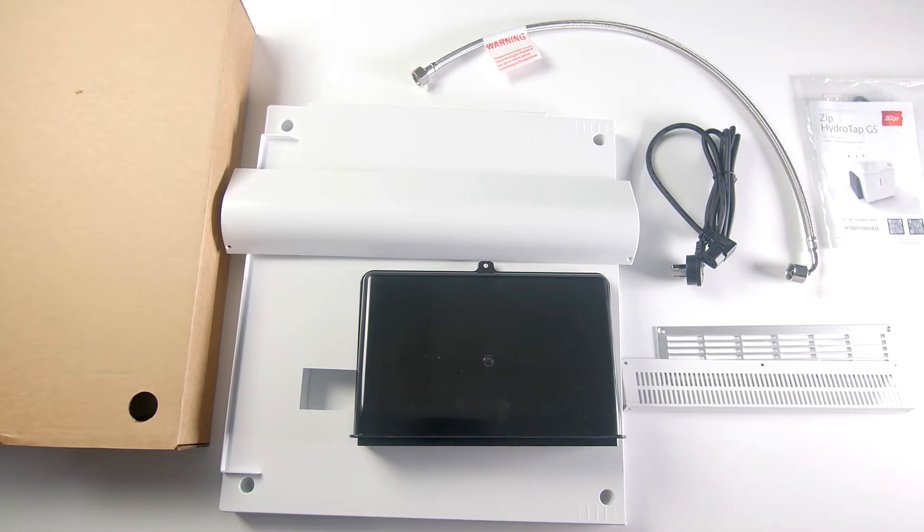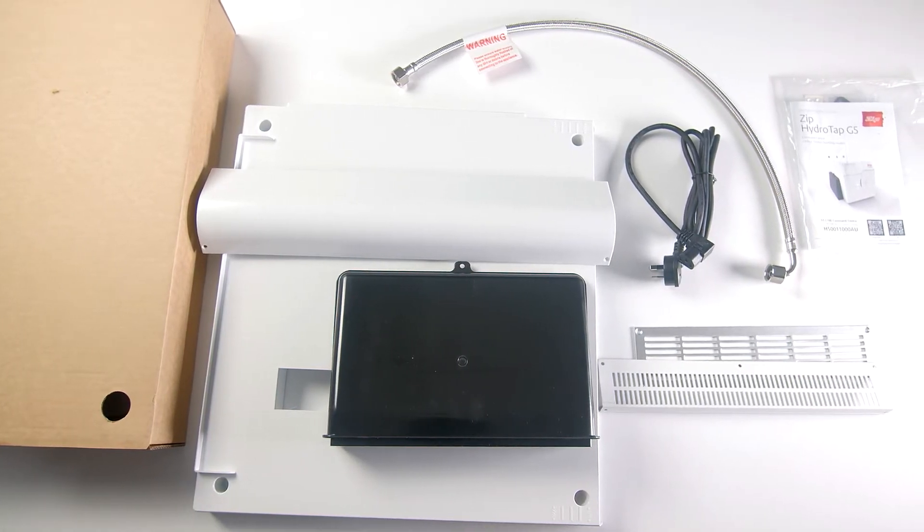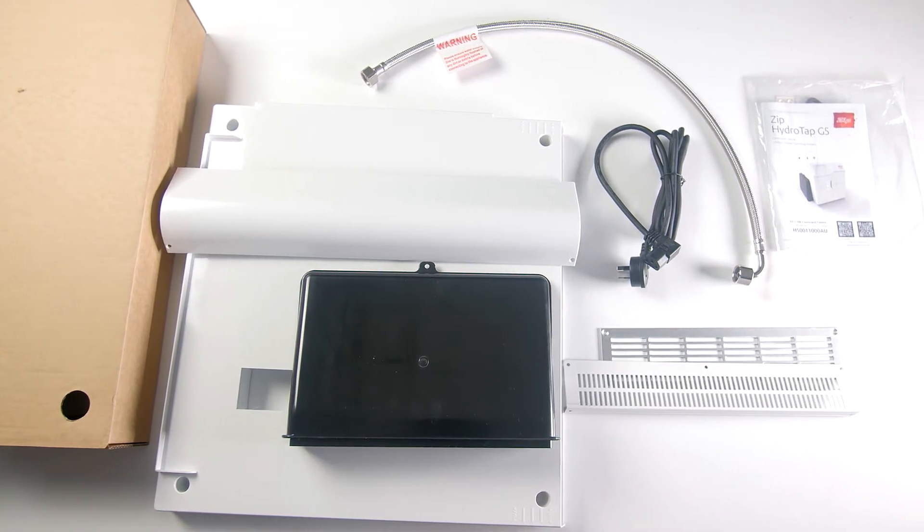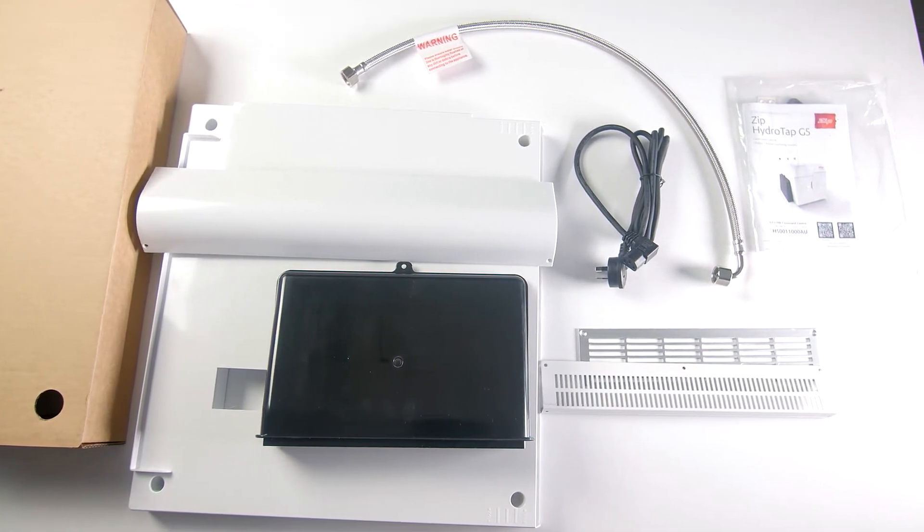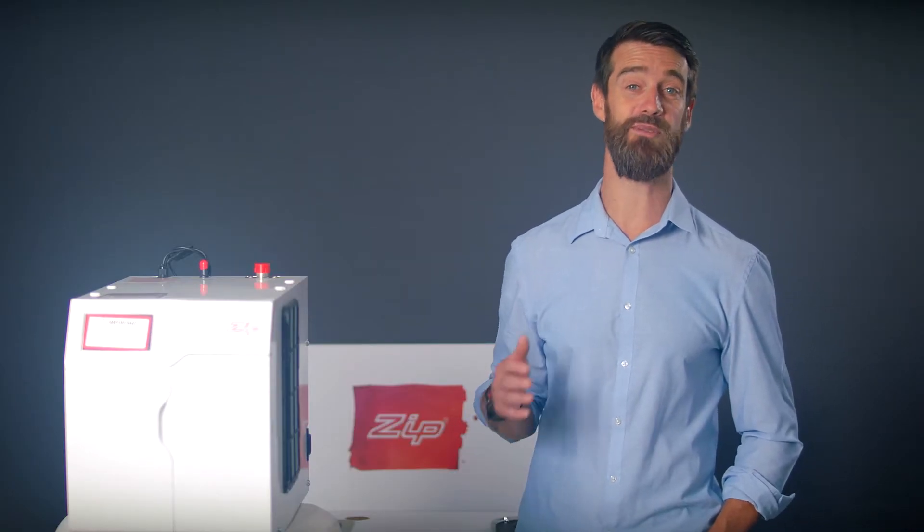Here's what you should receive in your new G5 HydraTap box: a command center, the vent tray, braided hose, IEC power lead, quick guide instructions which include a QR code link to the installation video you're now watching. You'll also receive the tap or faucet ordered with your HydraTap purchase.